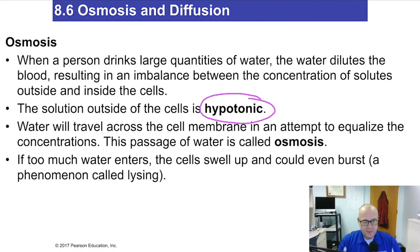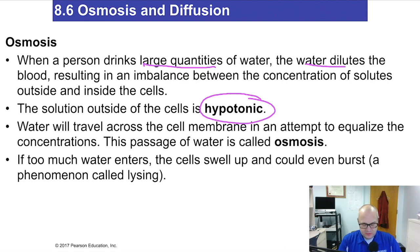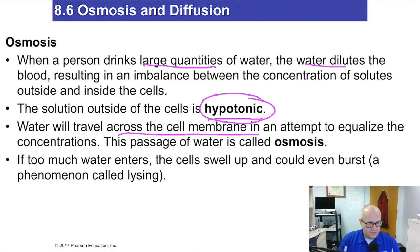Next term: hypotonic. When a person drinks a large quantity of water, the water dilutes the blood, resulting in an imbalance between the concentration of solute outside the cell and inside the cell. The solution outside the cell is what they call hypotonic. Water will travel across the cell membrane in an attempt to equalize the concentration - that passage of water is osmosis.